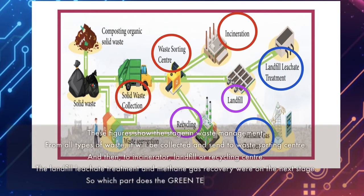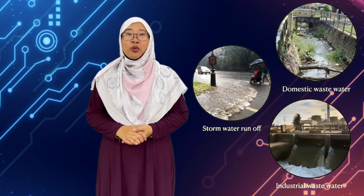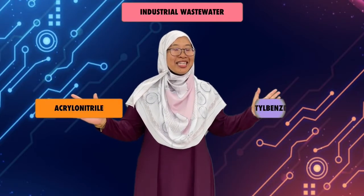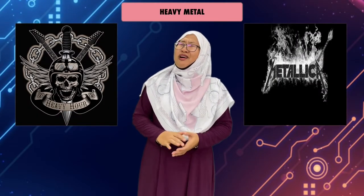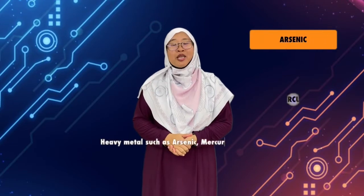Which part does Green Tech apply? There are three types of wastewater: domestic wastewater, stormwater runoff, and industrial wastewater. Industrial wastewater may contain acrylonitrile, metal benzene, and toluene. Industrial wastewater also contains heavy metals such as arsenic, mercury, and lead.